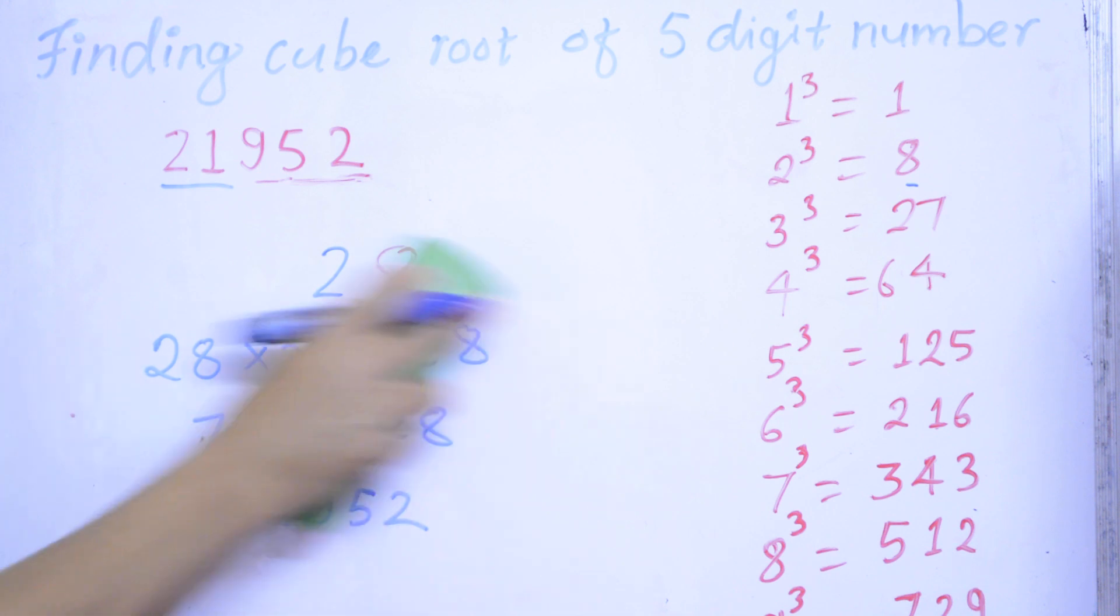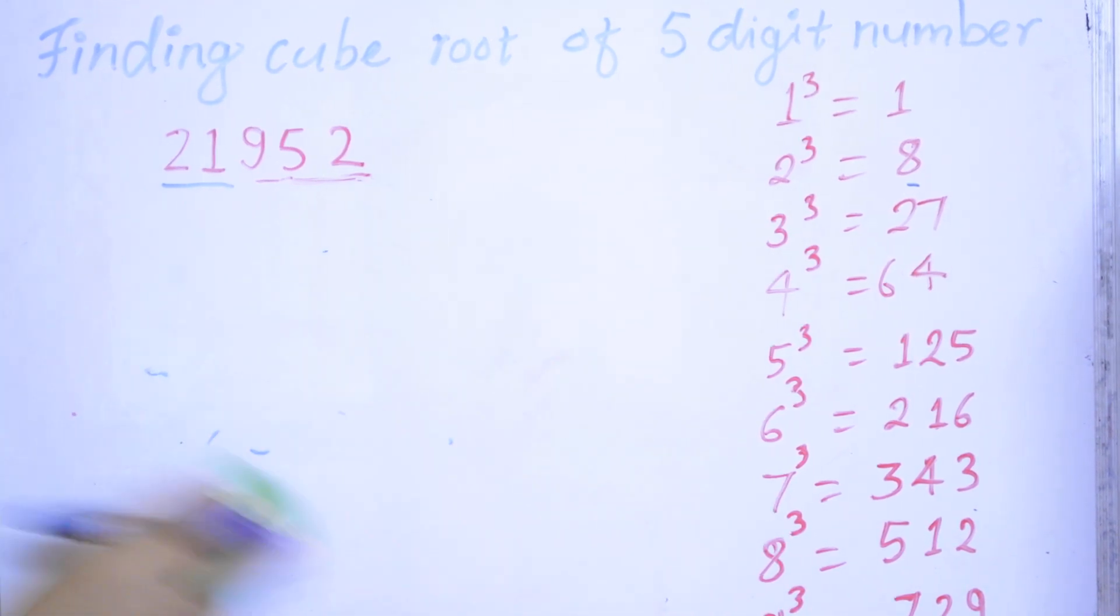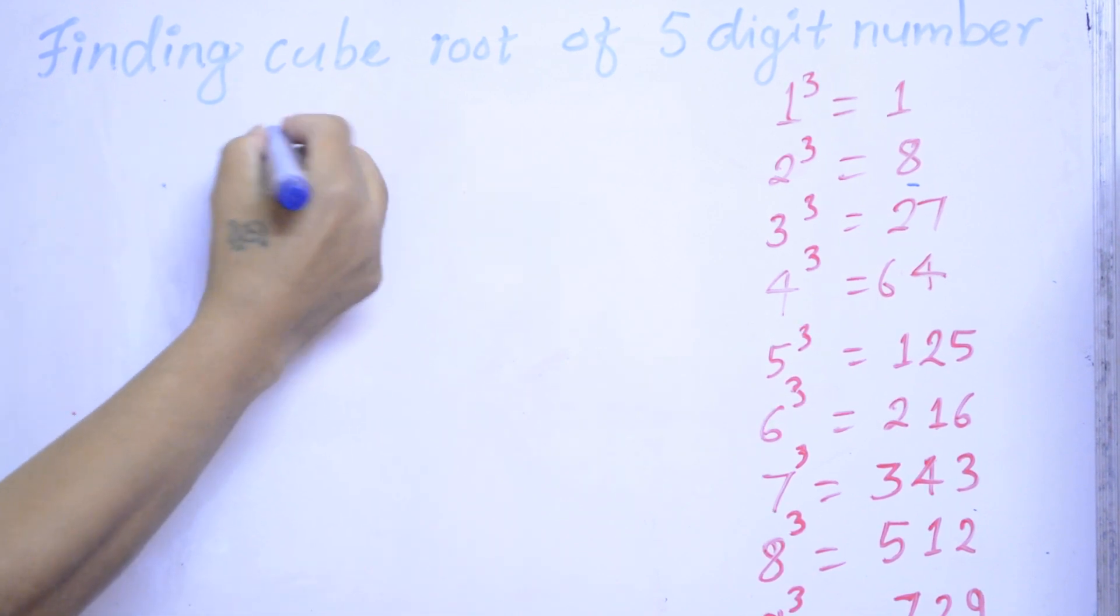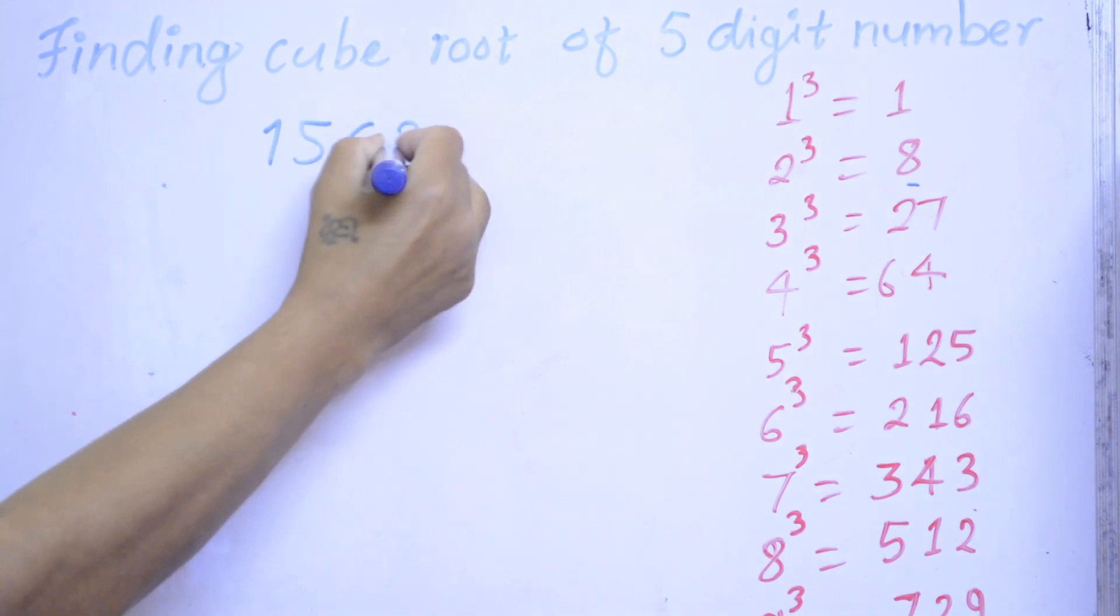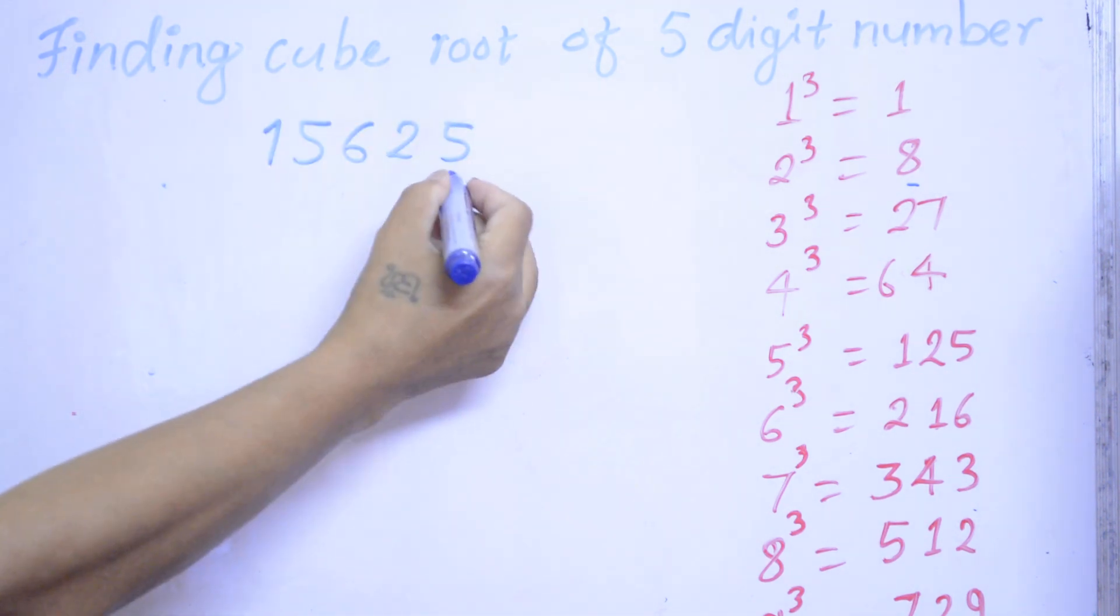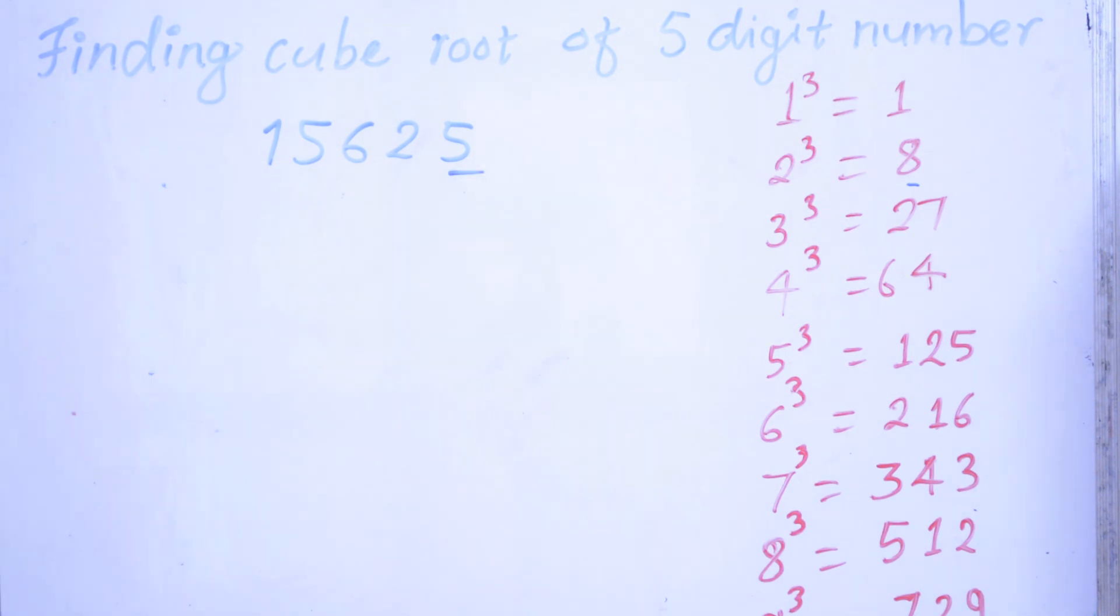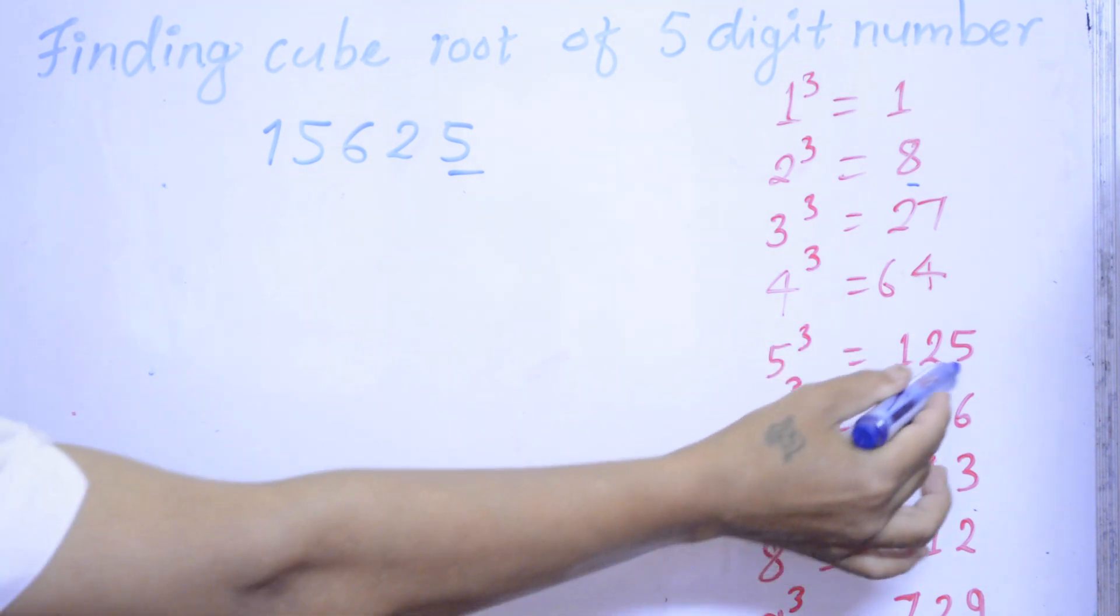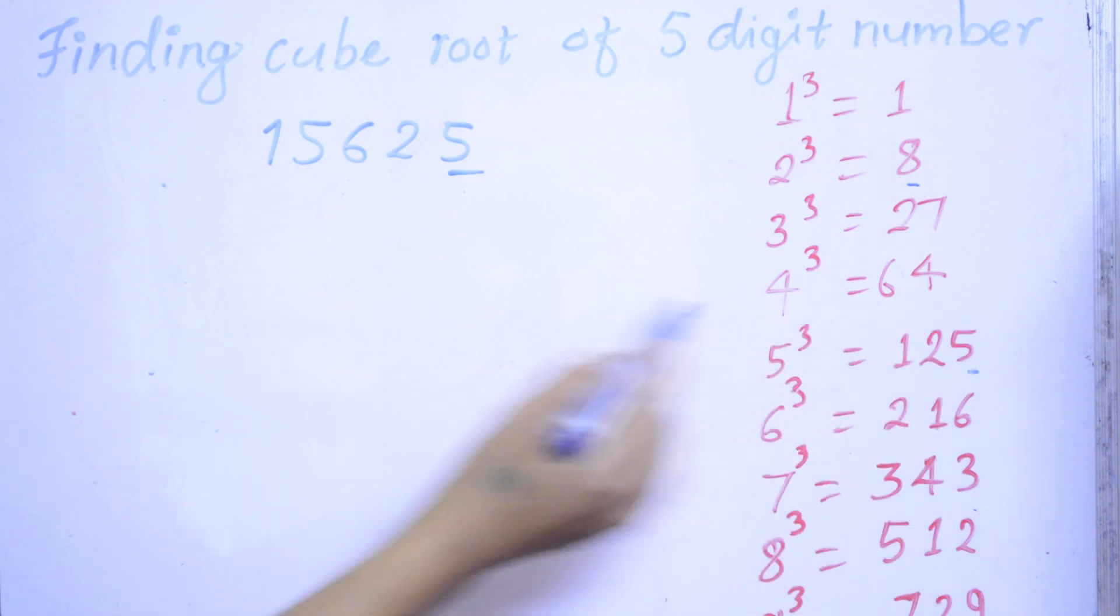Let's take another example. 15,625. So 5 is the last digit number. What is the cube root of 5? Cube of 5: 125. So we write here this last digit number only here.